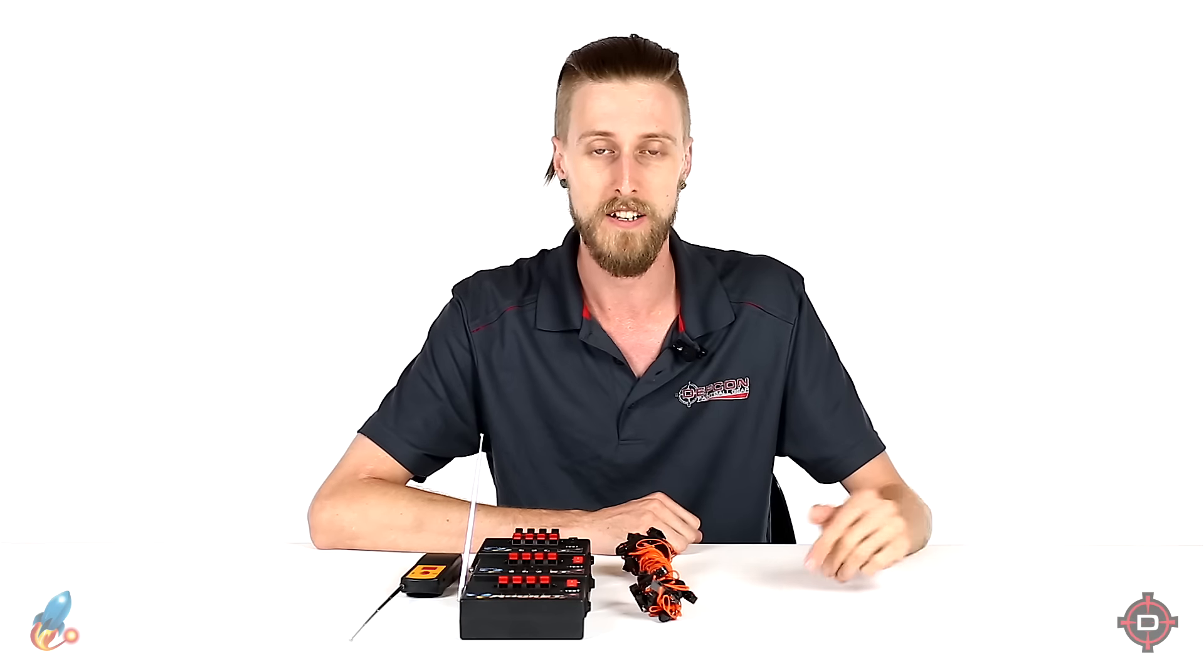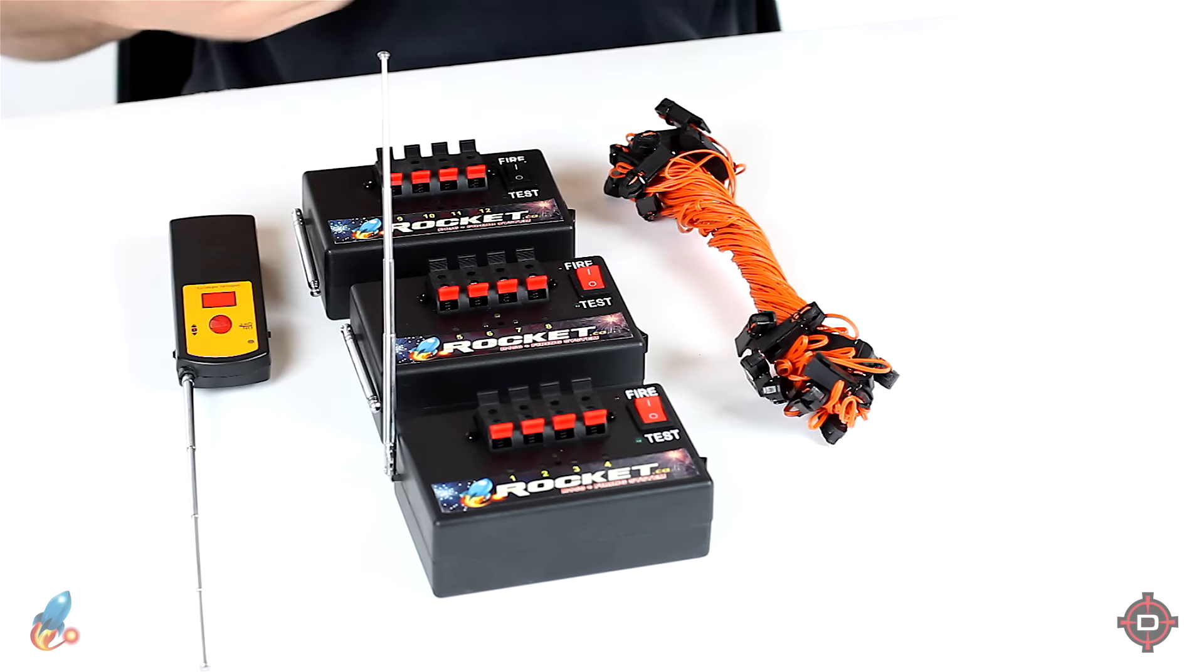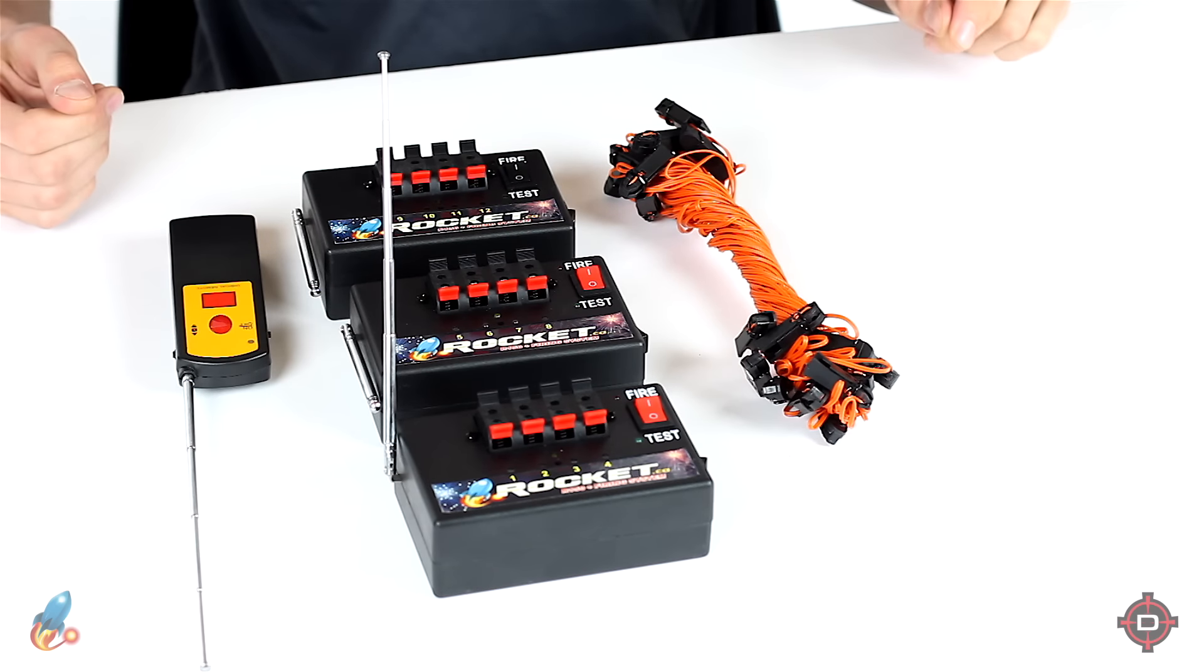And it'll work with smoke grenades that are wire pull as well. You do have to basically dig out the fuse from the smoke grenade. We are going to show you how to do that. It's not complicated, you just can't just use the wire pull. So we're going to show you a couple different setups, a couple different ideas of what you can do with these receivers. They have a lot of versatility because you can hook up so many different things to them. And yeah, let's just jump right into it.